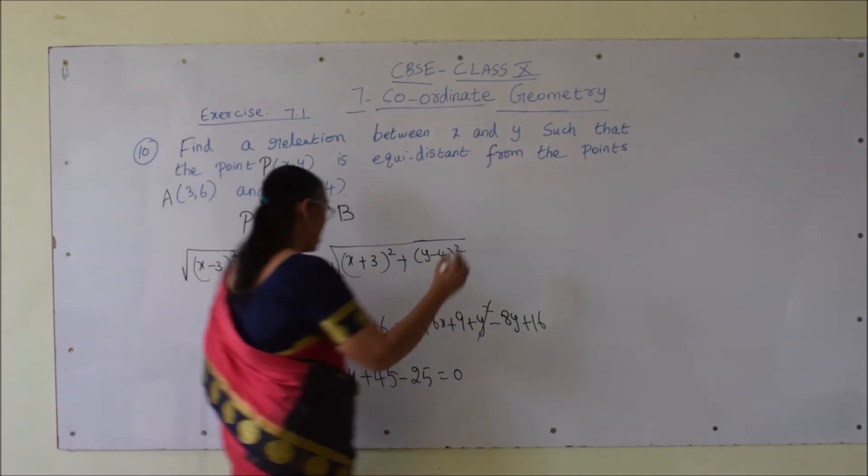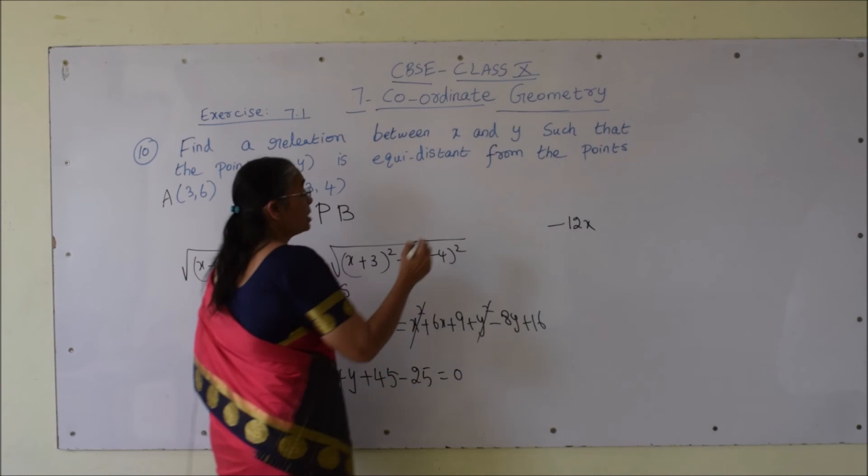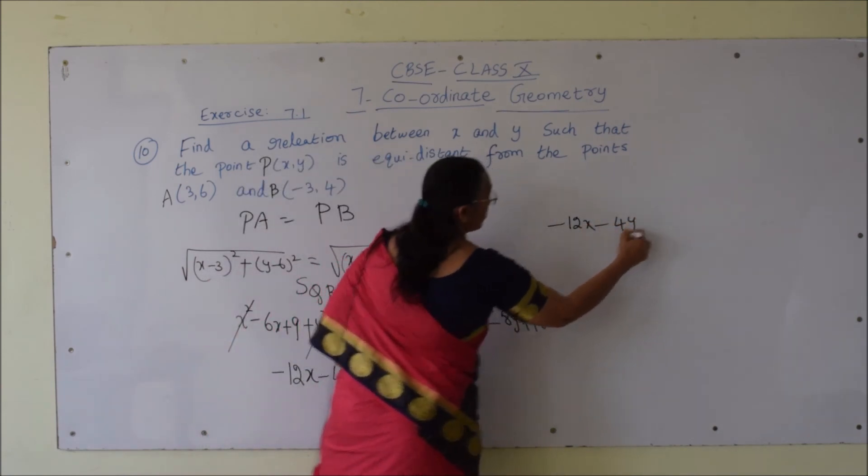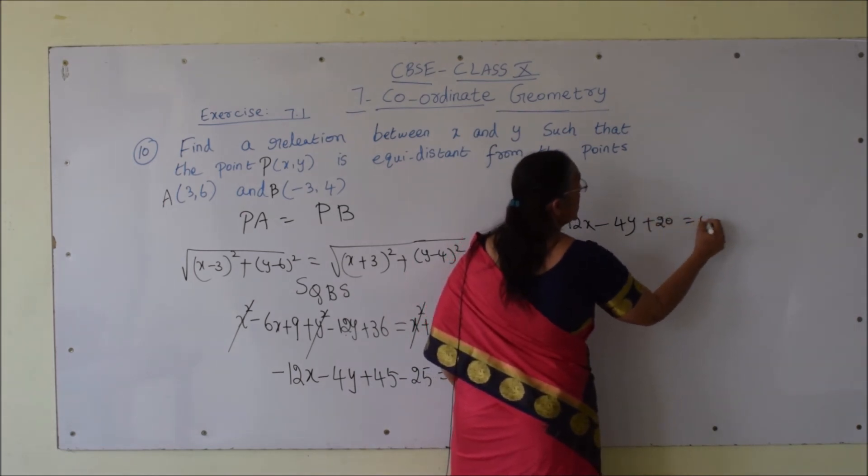So the equation is minus 12x minus 4y, 45 minus 25 is equal to 0.